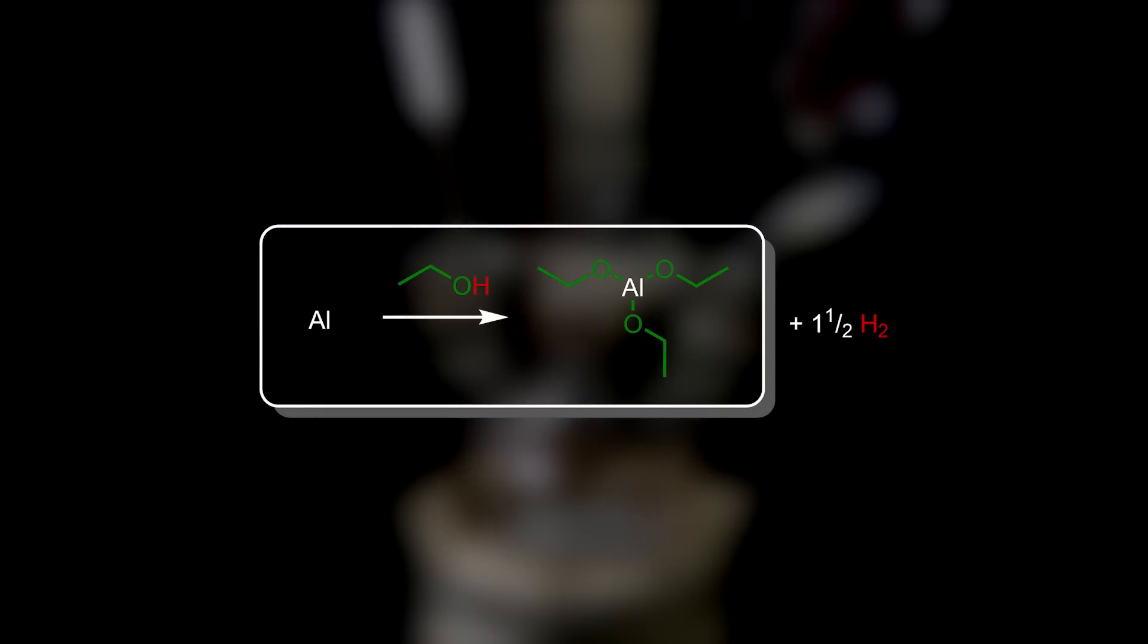In this second simple reaction, aluminum reacts with ethanol, forming aluminum ethoxide and hydrogen. Normally, we wouldn't think of aluminum metal as being too reactive, but that is only because of its oxide coating. If pure aluminum is exposed, it reacts very easily and generates a lot of heat.